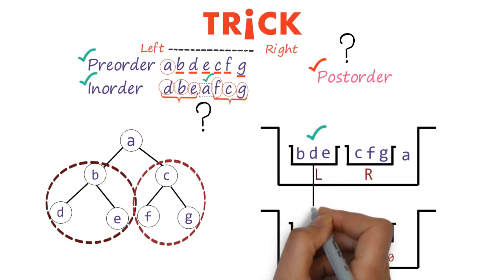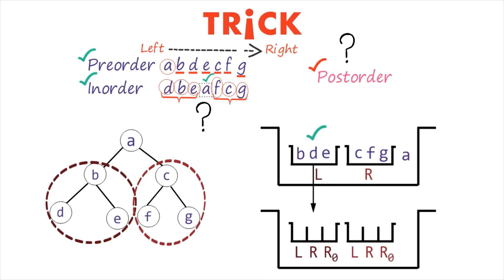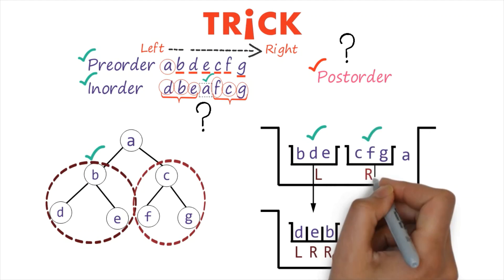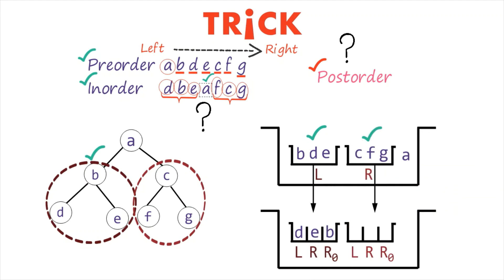Dividing the left subtree portion into three parts — left, root, right: the root of the left subtree is B, the left side has D, and the right side has E. Similarly, dividing the right subtree into three parts — root, left, right: the root of the right subtree is C, the left of the right subtree is F, and the right of the right subtree is G.